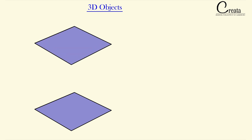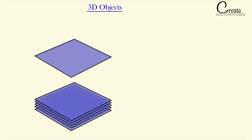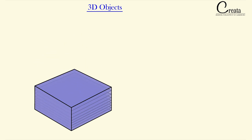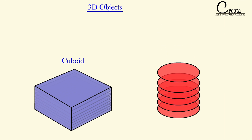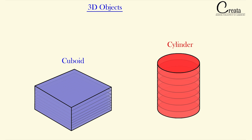The base of any 3D object is a 2D shape. For example, let's take a rectangular plane — a rectangle. If we keep on adding similar, congruent rectangles over each other, we get a 3D shape: a cuboid. Similarly, if we take a 2D circular shape — a circle — and keep on piling the same circle over each other, we get a cylinder. So the base of any 3D object is a 2D object.